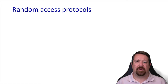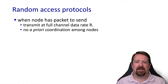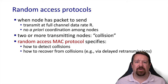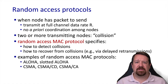Now we'll look at how random access protocols can work. The basic idea is that if a node needs to transmit a packet, it just does so at the full rate of the channel. If another node happens to try to transmit at the same time, there will be a collision and both transmissions will be lost. So the random access MAC protocol needs to specify how collisions will be detected and what recovery actions should be taken. The earliest and simplest examples were the Aloha and slotted Aloha protocols, and the successors to these are CSMA with the CSMA-CD and CSMA-CA variants in use today.